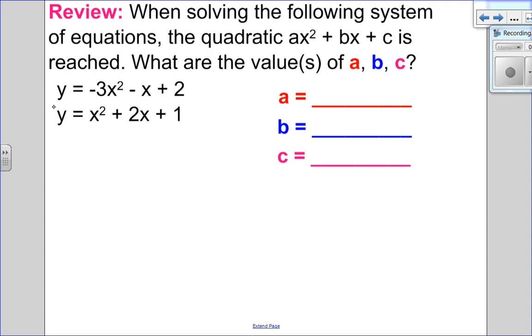It's set up nicely with y equals. I could use substitution or elimination. I'm going to use elimination. Y take away y is 0. Negative 3x squared take away x squared is negative 4x squared. Negative x take away 2 is negative 3x and 2 take away 1 is positive 1. So that is a quadratic equation. One possible answer would be negative 4, negative 3, and 1.